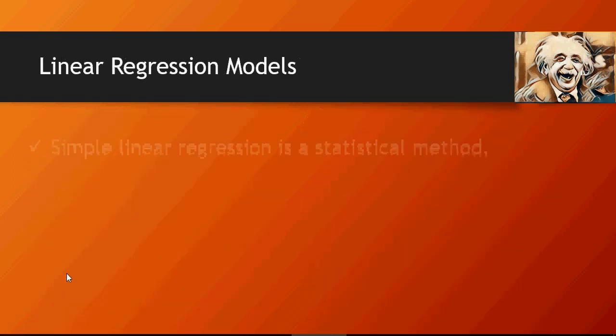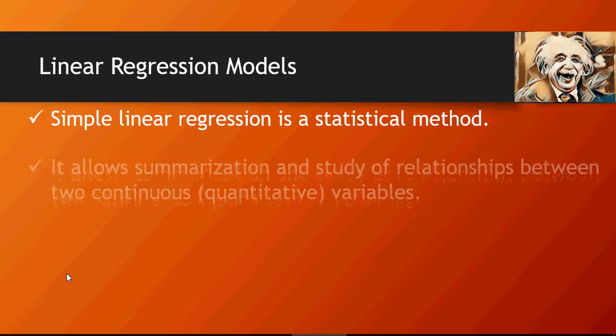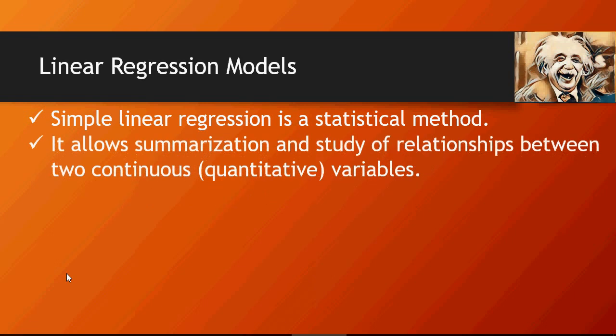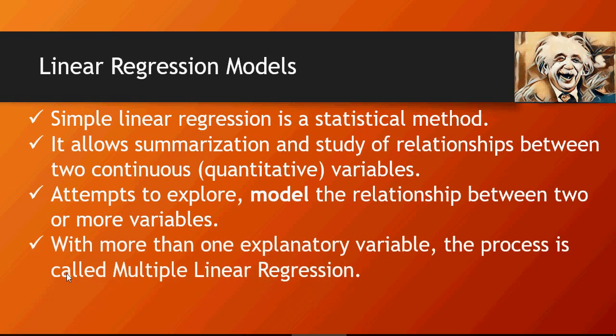What is linear regression? It's a very simple statistical method, a type of predictive model which helps study the relationship between at least two variables — one would be the independent variable, the other would be the target variable. It attempts to explore the relationship between two variables, which is simple linear regression; if there are more variables it's known as multiple linear regression.